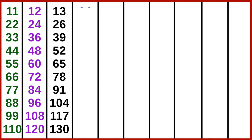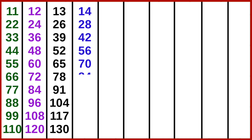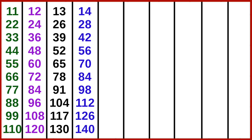14 ones are 14, 14 twos are 28, 14 threes are 42, 14 fours are 56, 14 fives are 70, 14 six are 84, 14 sevens are 98, 14 eights are 112, 14 nines are 126, 14 tens are 140.